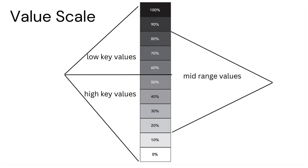Here I've got a value scale from 0 to 100 — I think this is 11 squares. Sometimes you'll see it represented as 1 to 10 or 1 to 9, and it really doesn't matter. It's just showing you that all of the values in the bottom half, the lighter values, are high-key values. And then all of the values in the upper area are lower-key values. So a reference or painting that has just lighter values would make it a high-key painting.